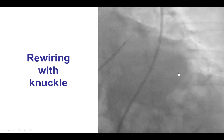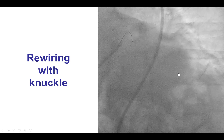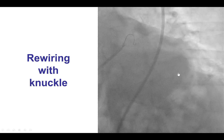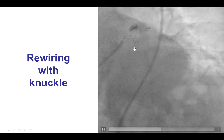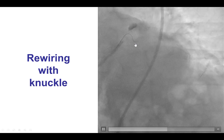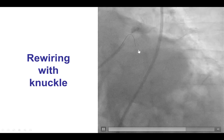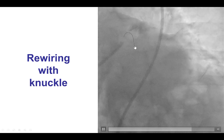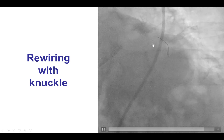So we had to rewire the vessel, which was done similar to the first time with a Workhorse guide wire. Now it tended to favor going to the obtuse marginal branch, but then it could be redirected into the circumflex.